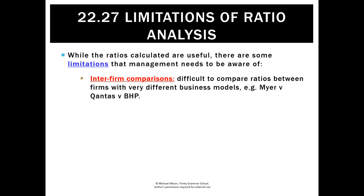Another limitation is that we want to be wary of interfirm comparisons. It's very different to compare businesses in different industries because they have very different business models. For example, comparing Myer with Qantas or BHP. Myer is a retailer with a lot of stock, which affects gross profit margin. Qantas, on the other hand, has a lot of non-current assets which might affect its overall debt ratio. So we probably only want to make comparisons with companies that are in the same industry.